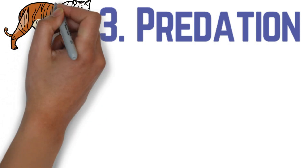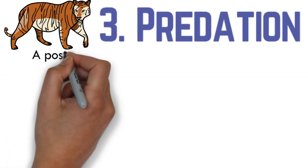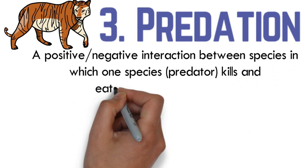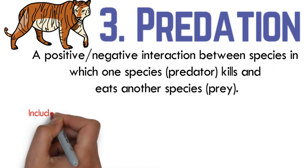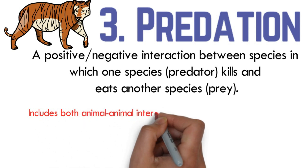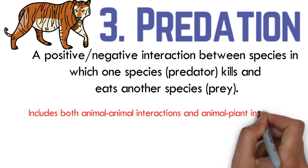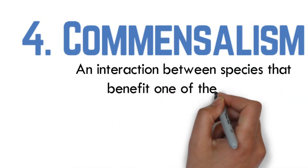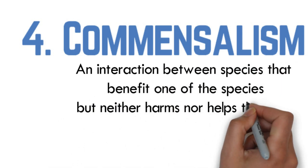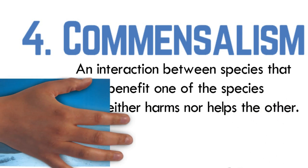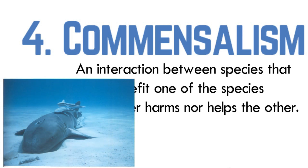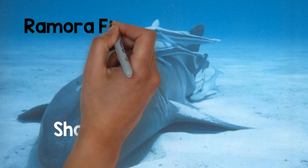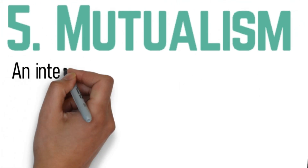The third interaction between biotic components is predation. Predation is a positive-negative interaction between species in which one species, the predator, kills and eats another species called the prey. This can include both animal-animal interaction or animal-plant interaction. Next is commensalism. Commensalism is an interaction between species that benefits one of the species but neither harms nor helps the other. A typical example is the shark and remora fish, where the remora fish feeds on stray bits of food left by the shark and is also attached to the shark for free transportation.